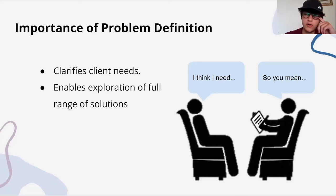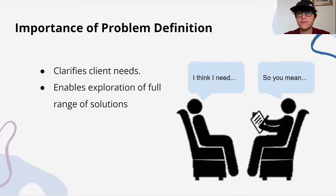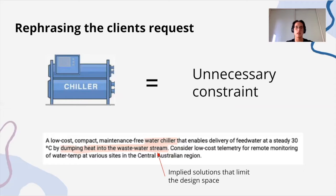Xavier will be justifying the quality of our problem statement. We believe our problem statement to be of high quality as it states who was affected by the problem or need, what this specific problem or need is, and why we must solve this issue. We determined that needing to create a water chiller, a supposed customer requirement, was actually an unnecessary constraint. We also found that the need to dump heat into the wastewater stream was a misunderstanding on the customer's part and another needless restriction.